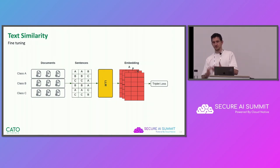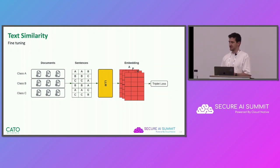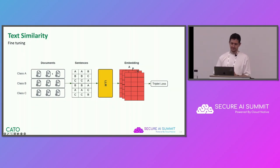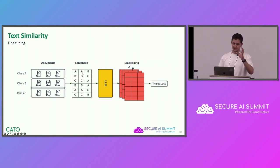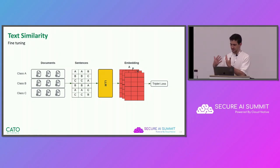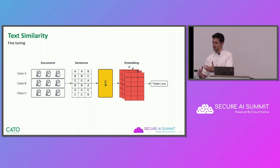Now that we know the loss function, we can talk about the training phase. We have different documents from different sensitive categories — A, B, C in this example — and we create a training set of triplets. Each time we take two sentences from a single class and a sentence from a document from a different class. So for example, A, A — two sentences from class A — and B, a sentence from class B. This training set is passed to the large language model, which creates the embeddings. With the embeddings, we calculate the loss function and backpropagate the error back to the network — a stage that goes on and on until the network is finally trained.